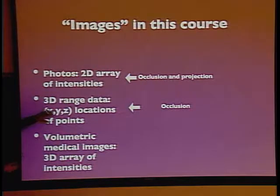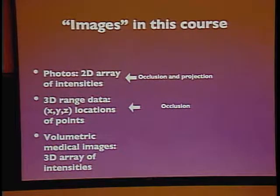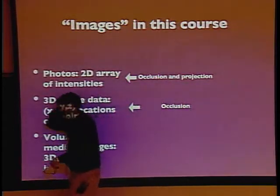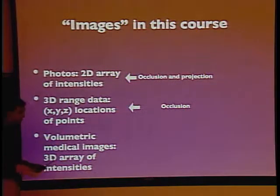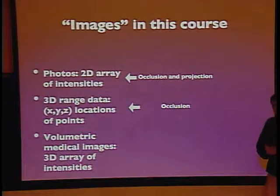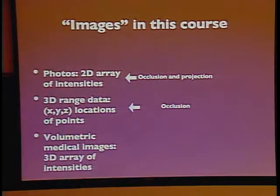With 3D range data, you still have the occlusion problem — if I do a 3D scan of my face, you can capture the relative shape of my nose and eye sockets, but you still won't be able to see the inside of my brain. So the problem of occlusion is still there, but projection has gone away. With volumetric medical images, on the other hand, you get the whole thing: the inside of my brain, the shape of my nose, the back of my head. The additional problems of occlusion and projection are what add complications to processing photographs and range data.